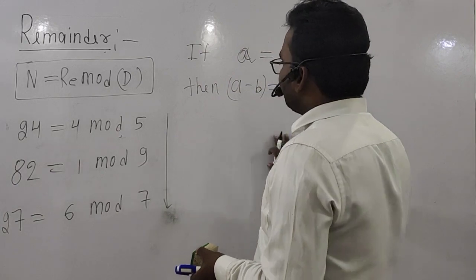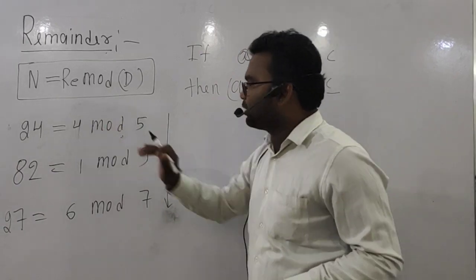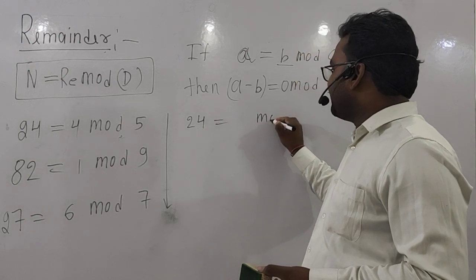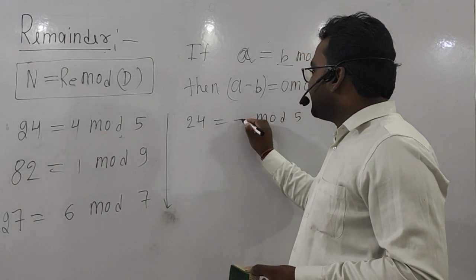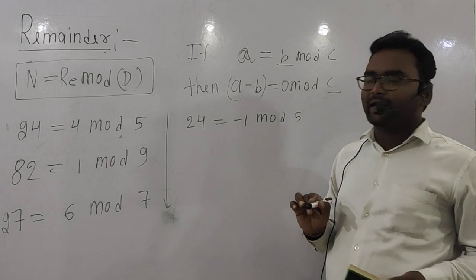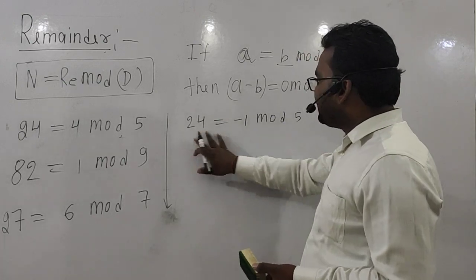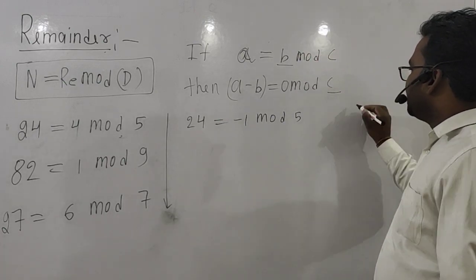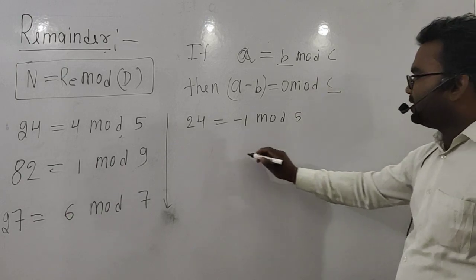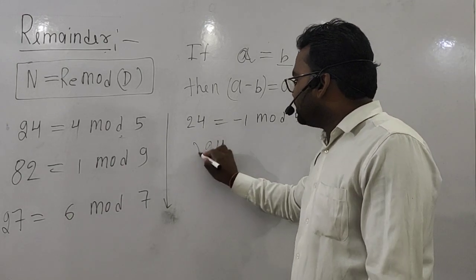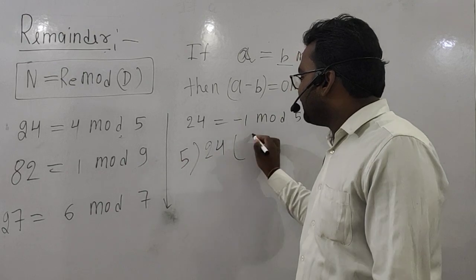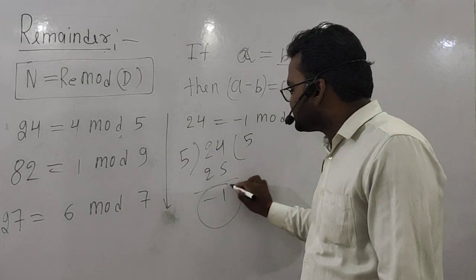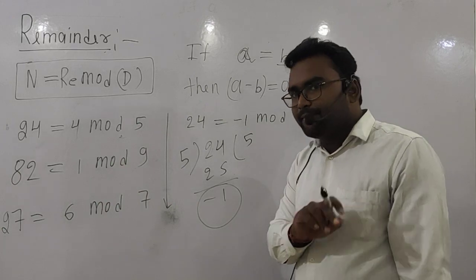Now here is another concept: 24 divided by 5 gives remainder minus 1. This is also valid. The reason is: 5 times 5 is 25, so 24 is one less than 25, giving remainder minus 1. We will explain why this is useful.